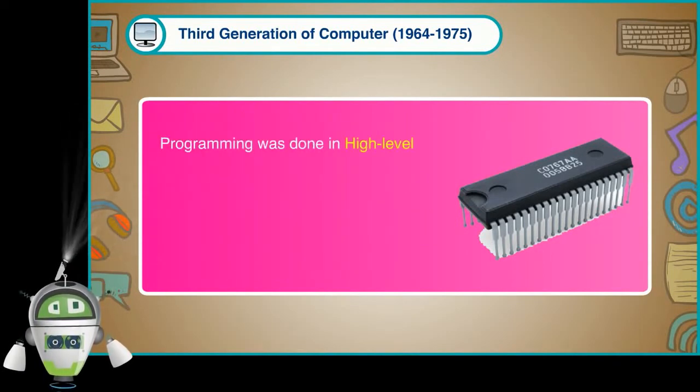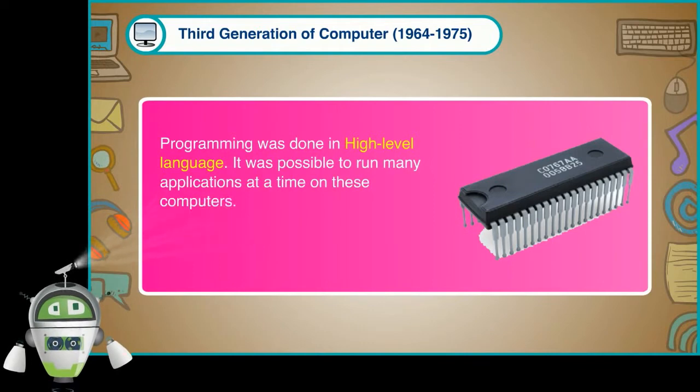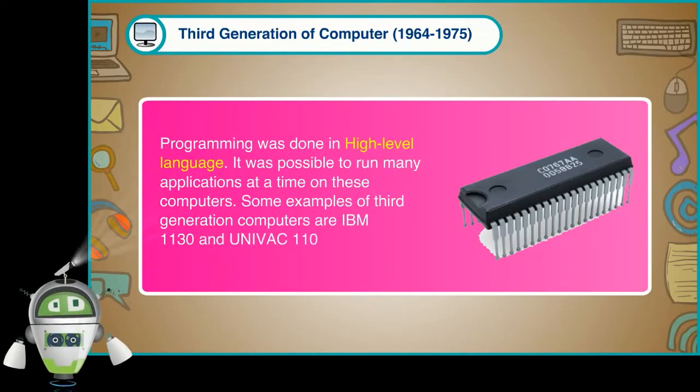Programming was done in high-level language. It was possible to run many applications at a time on these computers. Some examples of third generation computers are IBM 1130 and UNIVAC 1107.